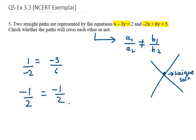So these two straight paths do not cross each other because the first two ratios are similar. If it is not similar, then it must be a unique solution, or you can say that they can intersect each other.